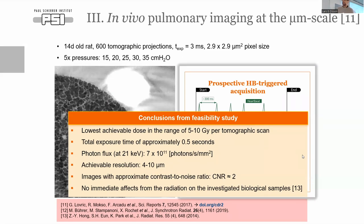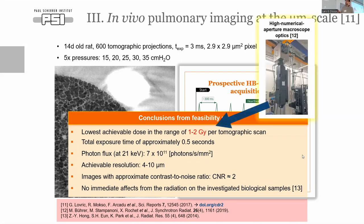Total exposure time was below a second but the whole scan took about two minutes. The achievable resolution — the features we can see in the lung — is in this size range, with pixel sizes roughly below three micrometers. This was all part of an acute experiment where we had no immediate effects from radiation dose, but the dose is very high.